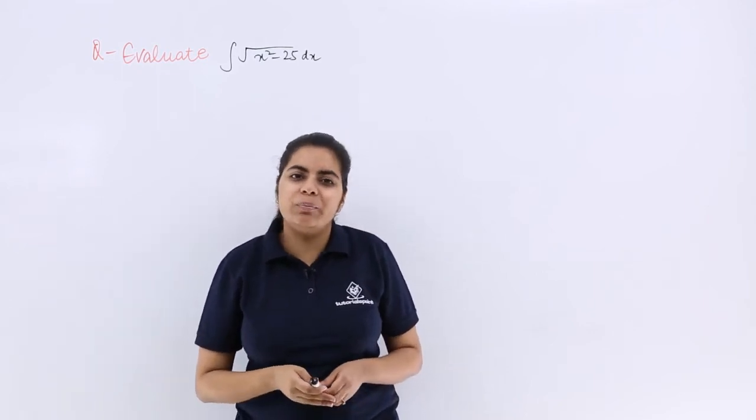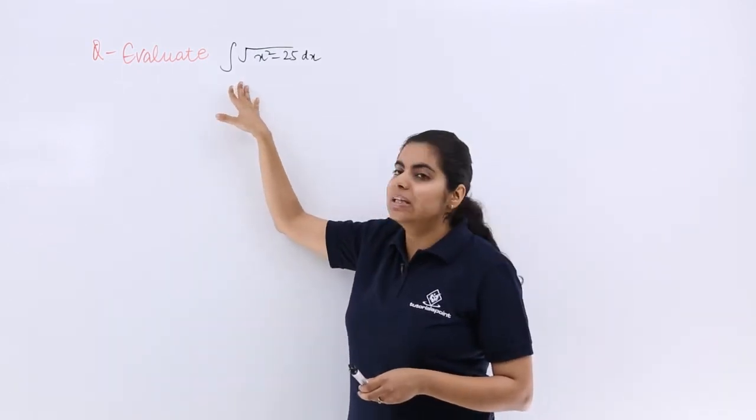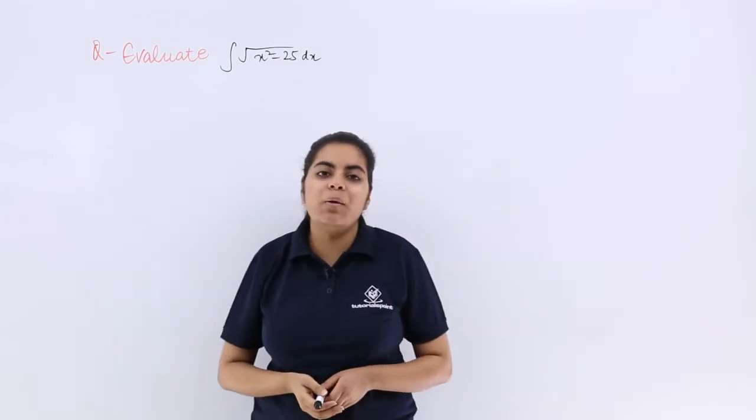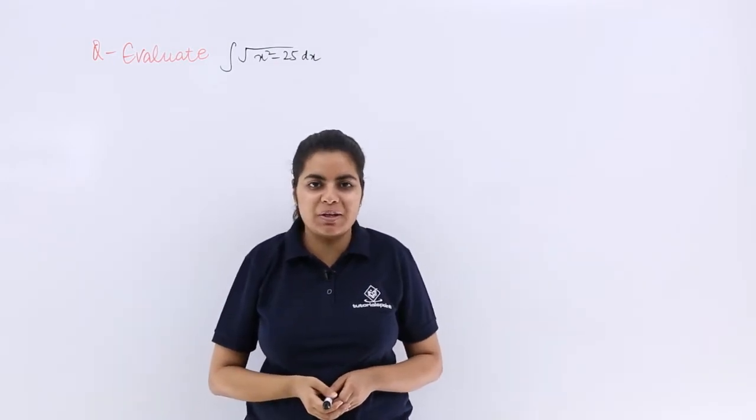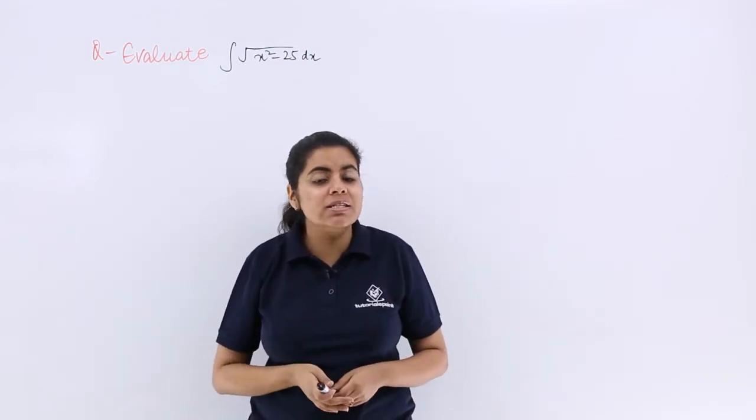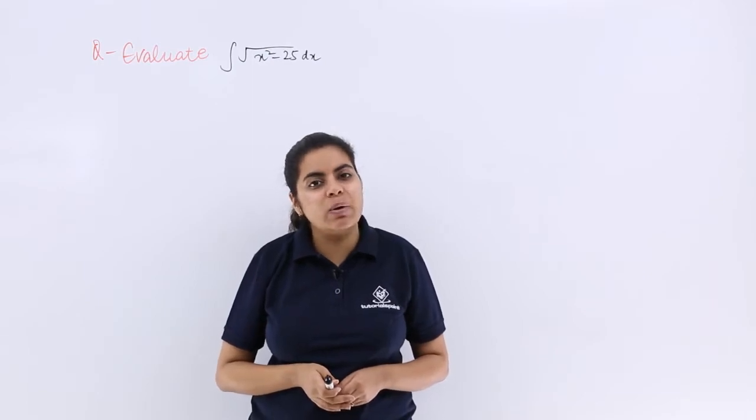In this video, let's see a numerical problem which says evaluate the integral of under root x square minus 25 with respect to x. Now 25 is a whole square and it is the square of 5.